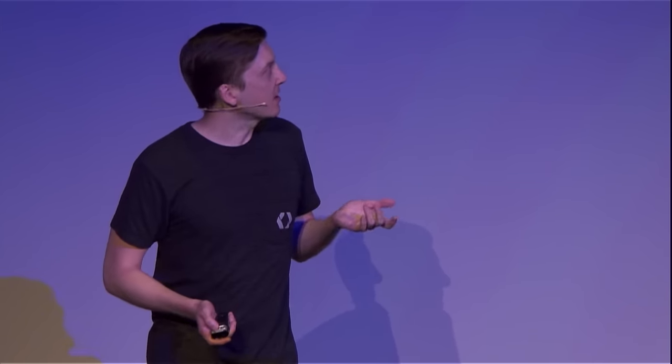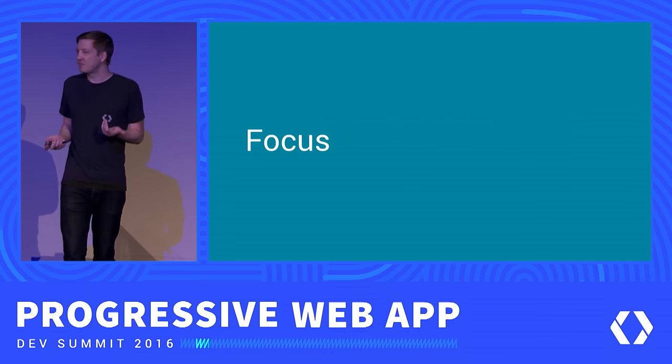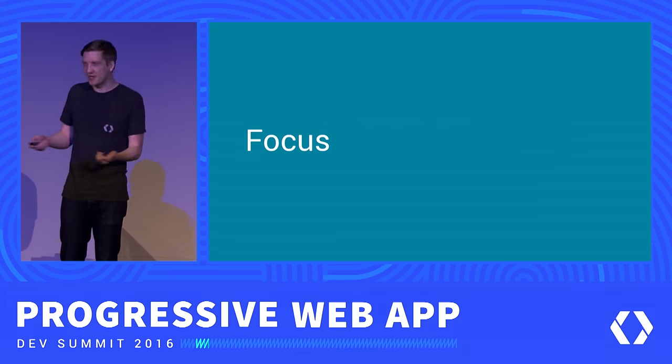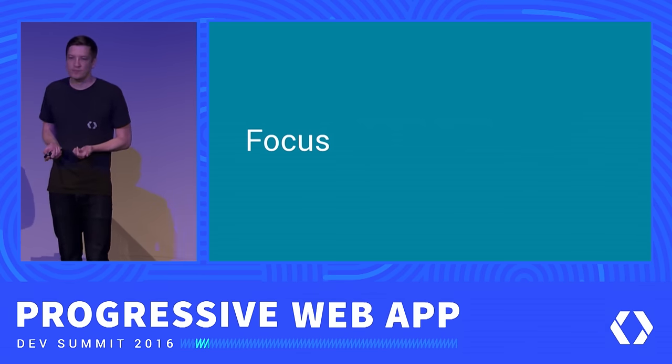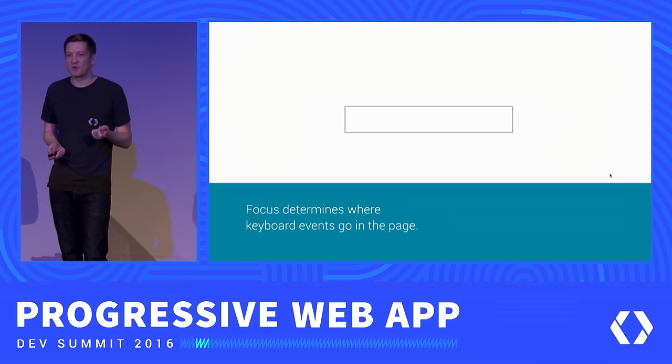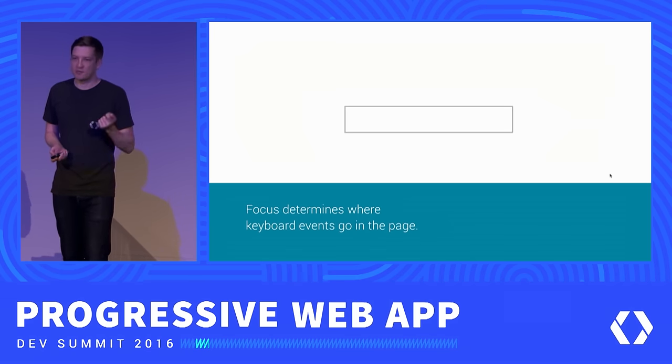With these checklists in hand, we're ready to explore some of the fundamentals needed to complete those checklist items. I want to start by looking at focus. What is focus? What does it mean for something to be focused in the browser? In a nutshell, focus determines where keyboard events go in the page. If I click on a text field, that act of clicking focuses it, and from then on, as I'm typing, all key events are directed to that element.